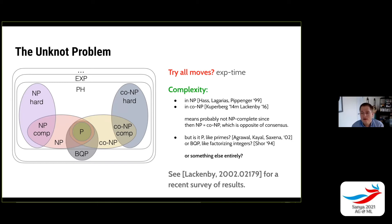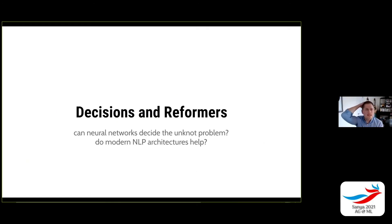Various things are known about the complexity of the unknot problem, but we're going to take a practical approach of just trying to solve it with machine learning. First we're going to set up the decision problem of just answering yes or no, then we'll turn to reinforcement learning. The question is: can neural networks decide the unknot problem? And in particular, do modern natural language processing architectures help?